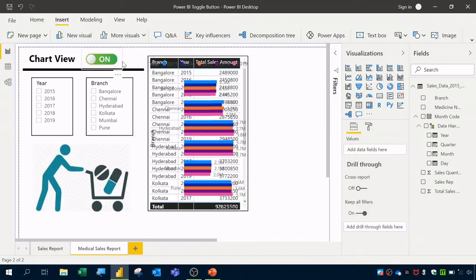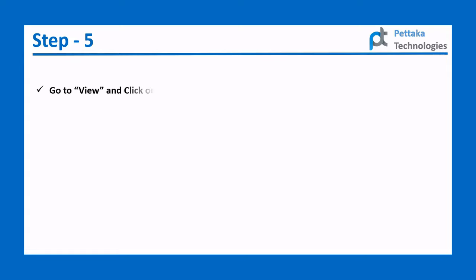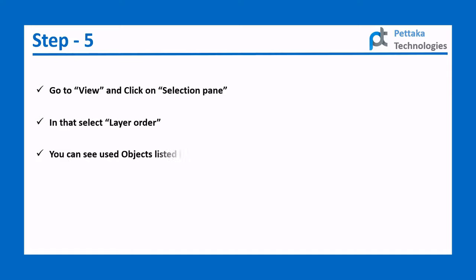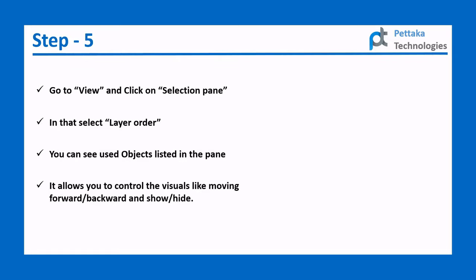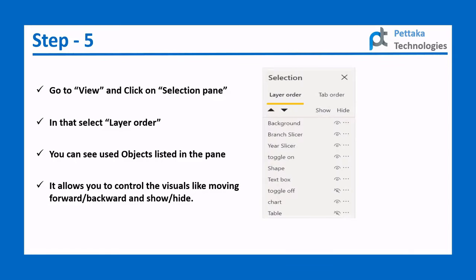I'll place both images at X position 167 and Y position 0. Now you can see both images positioned next to the chart view. In Step 5, go to View and click on Selection Pane, then select Layer Order. You'll see all the used objects listed there, allowing you to move them forward or backward and show or hide them.